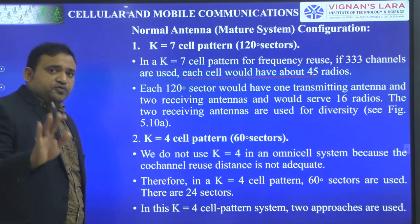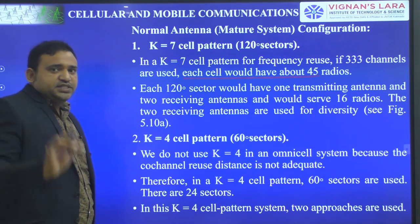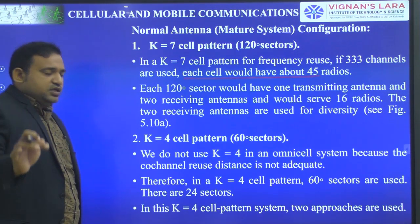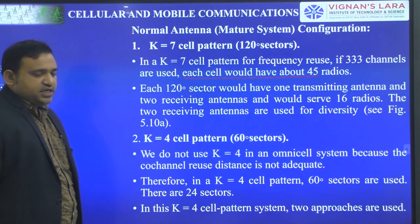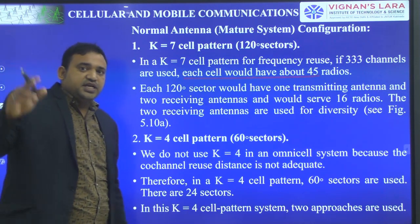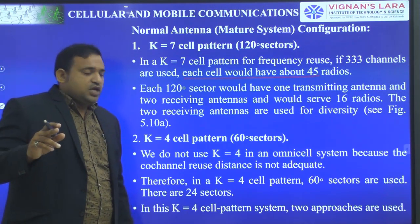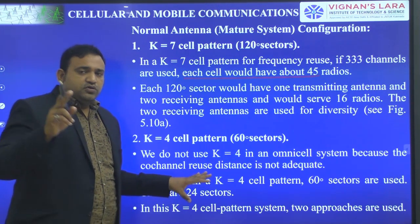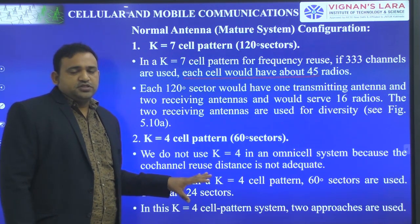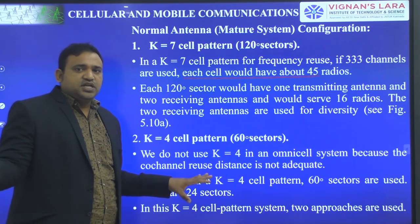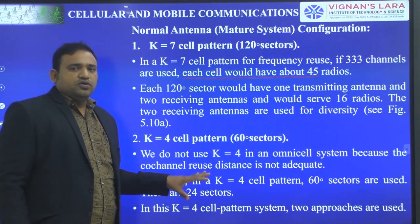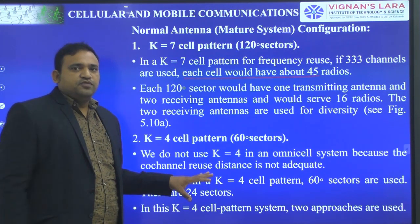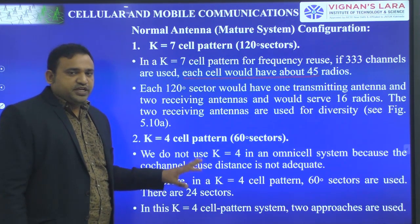If it is a K equal to 4, we use only a 60-degree sector, and then the C/I value is greater than 18 dB. If you have any doubt regarding these two statements, go to the Unit 2 video on design of a directional antenna system or omnidirectional system — you will get full clarity.